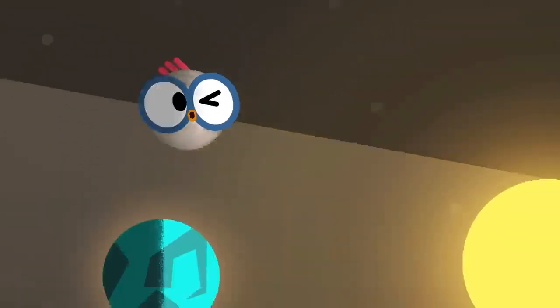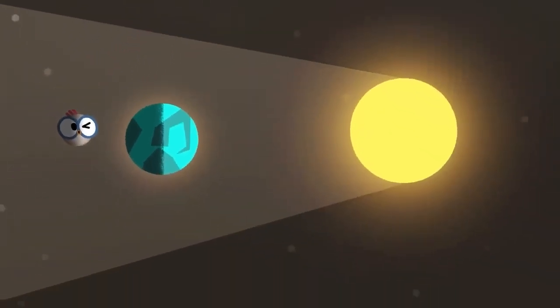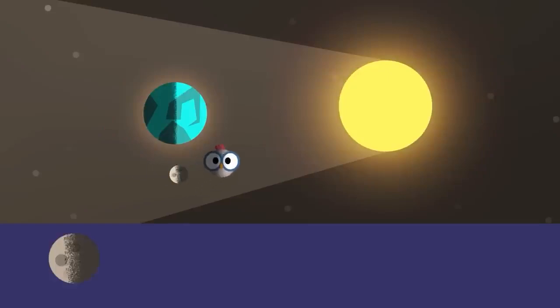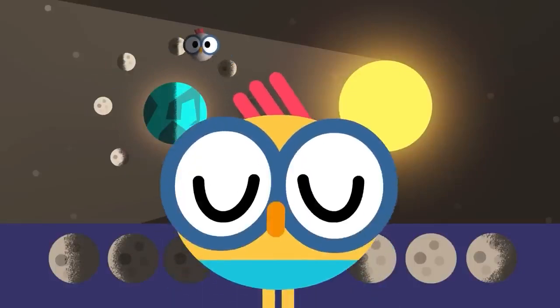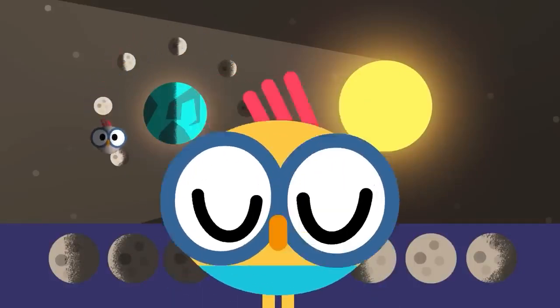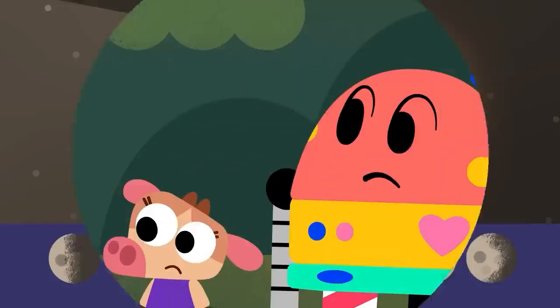We only see part of the moon where the sun shines, depending on where it is in relation to Earth at any given time. That's why sometimes it looks like it's missing a piece. No one is eating the moon. It's just the shadow. Does that make sense?